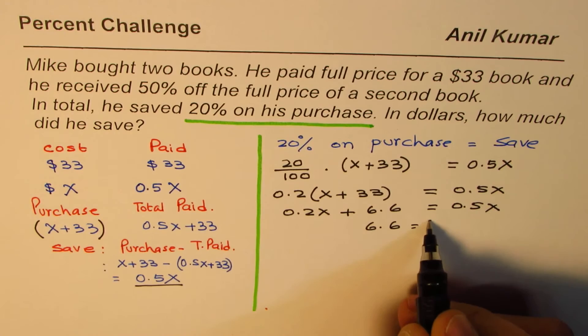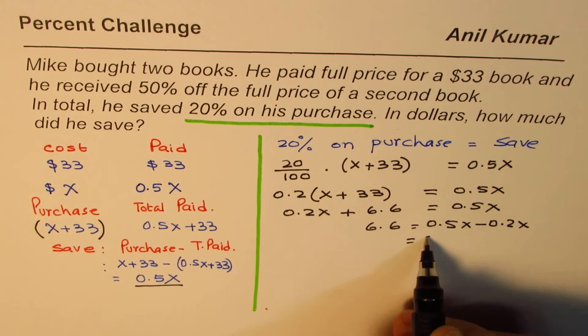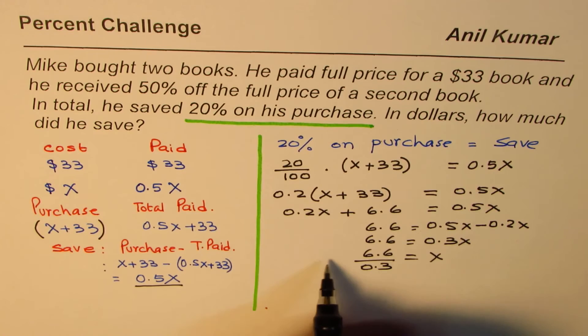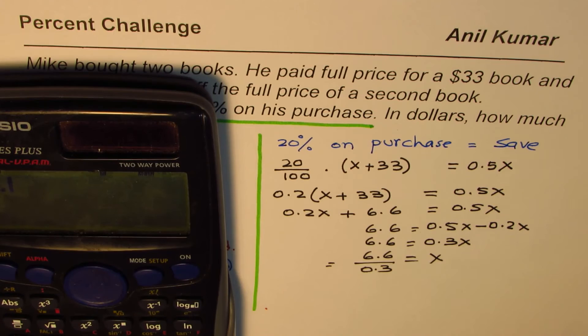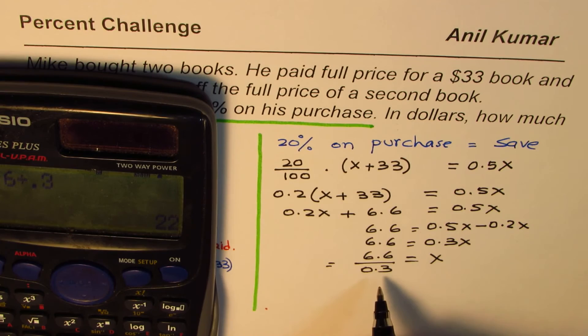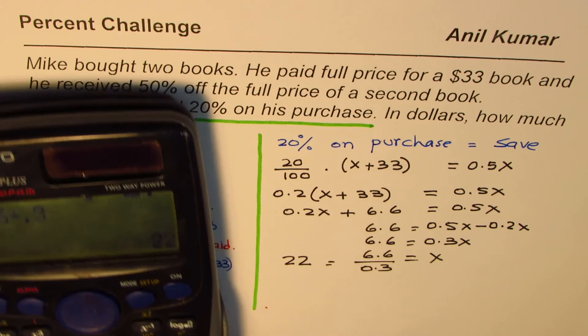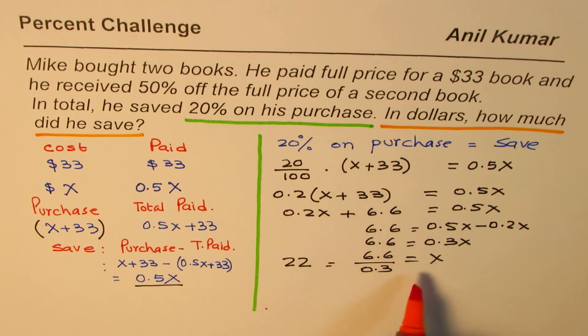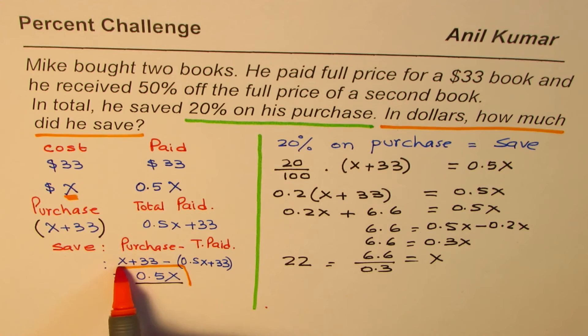Bring 0.2x to the right side: 0.3x = 6.6. Dividing both sides by 0.3 — you can use a calculator in the test since mistakes can be made with decimal division — we get x = 22. Now the question asks in dollars how much did he save, so we don't want x itself; x is the cost of the book. We want total savings.